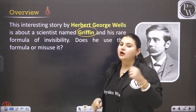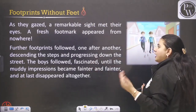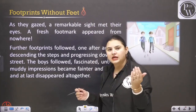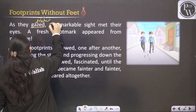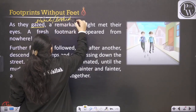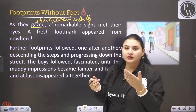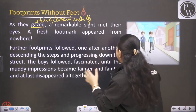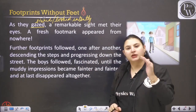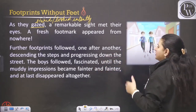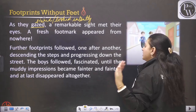First of all, remember the name of the writer: Herbert George Wells. As they gazed, a remarkable sight met their eyes. A fresh footmark appeared from nowhere. Here, they are talking about two boys. Gazed actually means stared - when they looked intently. They saw a remarkable sight, one that you cannot forget easily. Further footprints followed, one after another, descending the steps and progressing down the street. The boys followed, fascinated, until the muddy impressions became fainter and fainter and last disappeared altogether.